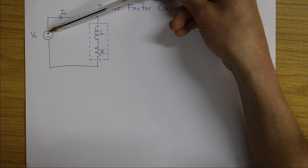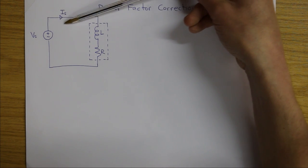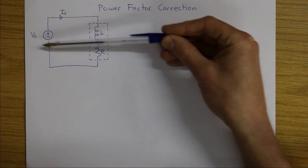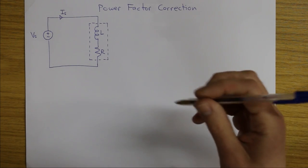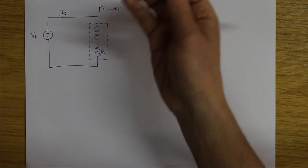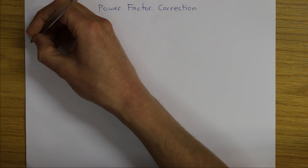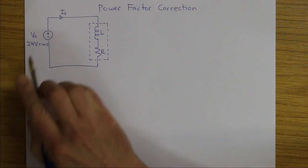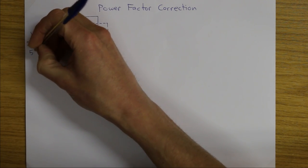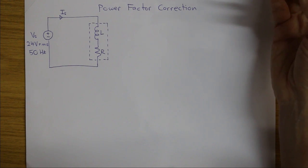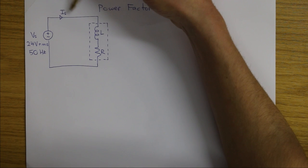Where the peaks occur in the voltage waveform, they'll be a little ahead in time of the current waveform. Both phasors represent sinusoidal waveforms. To put specific numbers on it: Vs is 240 volts RMS — that's the magnitude of phasor Vs — and the frequency of the waveform is 50 hertz, like mains electricity frequency here in Ireland. The current phasor will also be sinusoidal and in units of amps.